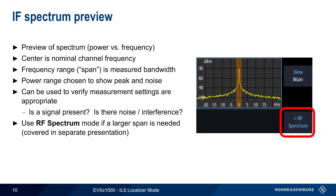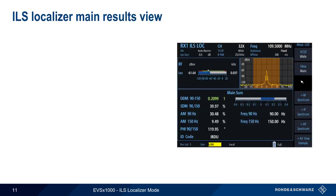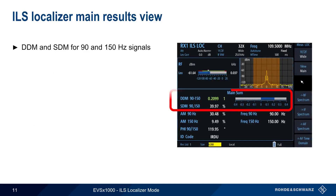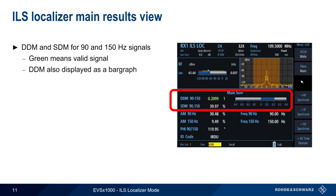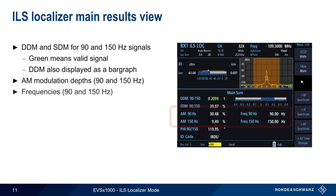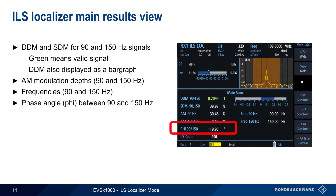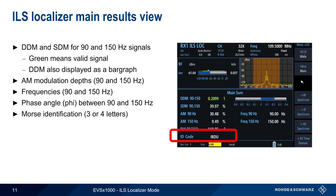Note that if RF Spectrum mode is chosen, the current settings such as channel frequency are transferred to that mode. The localizer numerical results view includes the difference of depth of modulation (DDM) and the sum of depth of modulation (SDM) for the 90 and 150 Hz localizer signals. Green is used to indicate the DDM signal, which is also displayed as a bar graph. The AM modulation depths and frequencies of the 90 and 150 Hz lobes are also displayed, in addition to the phase angle between them. Finally, the three- or four-letter Morse identifier of the localizer is decoded and displayed.